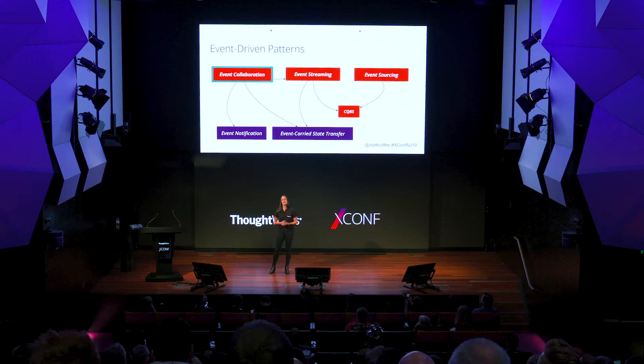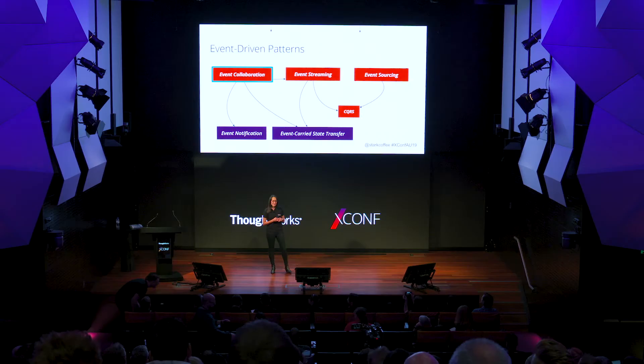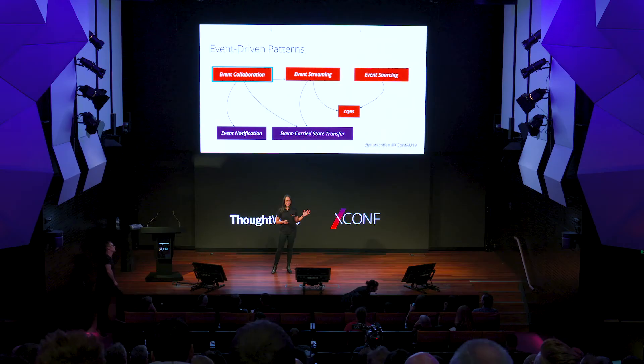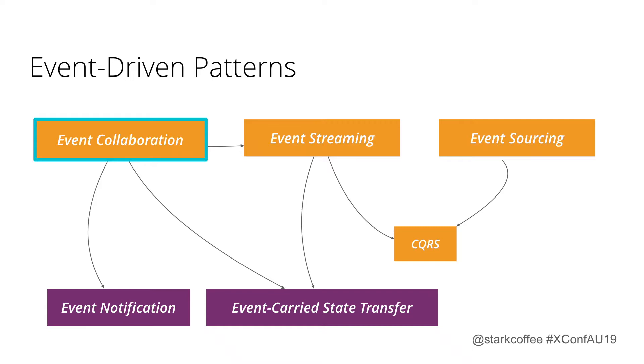Event sourcing is related — I think it's on its own branch in the architecture ancestry tree. I'll talk about it a bit later. CQRS I won't cover because that's a general architectural principle; it's a natural property of event streaming and event sourcing. The two purple patterns — event notification and event-carried state transfer — talk about what's in events, and I'll go through those.